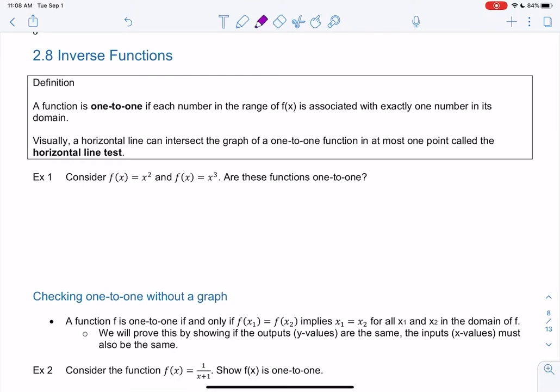But the definition is one-to-one. So a function is one-to-one if each number in the range of f(x), which means each y value, is associated with exactly one number in the domain. So that means each y value has exactly one x value in a less formal definition.